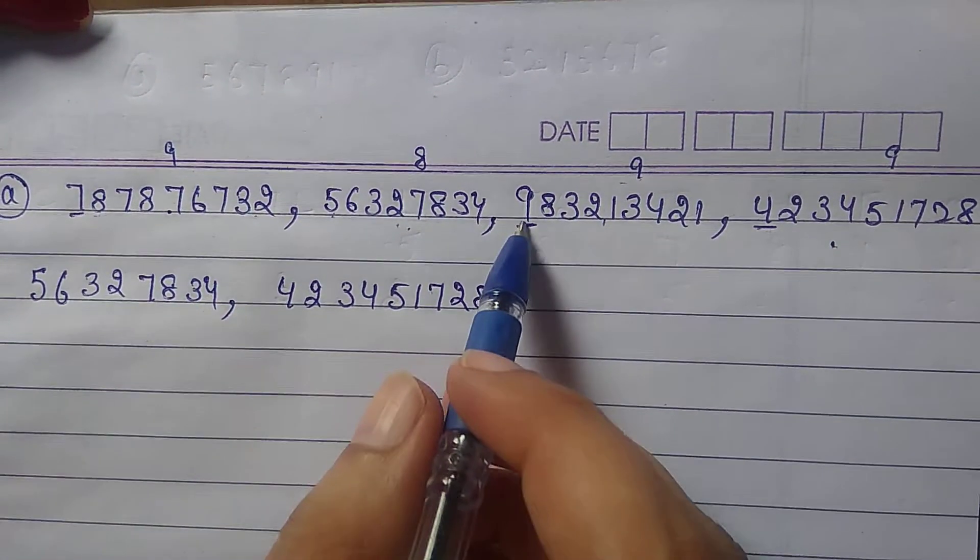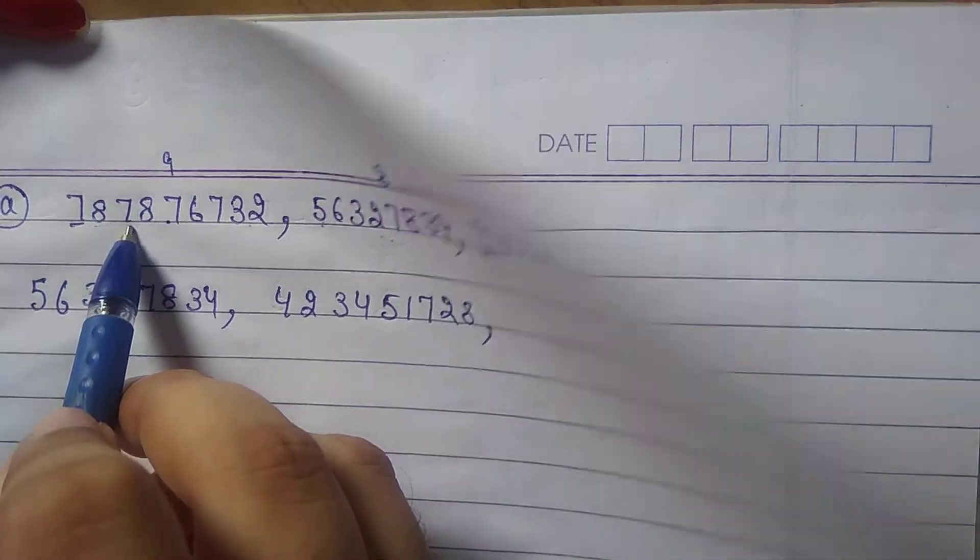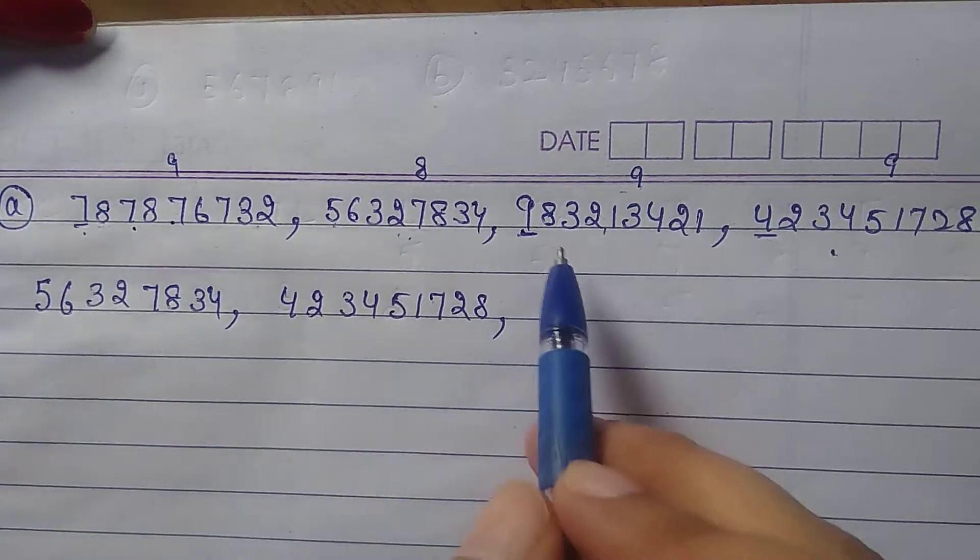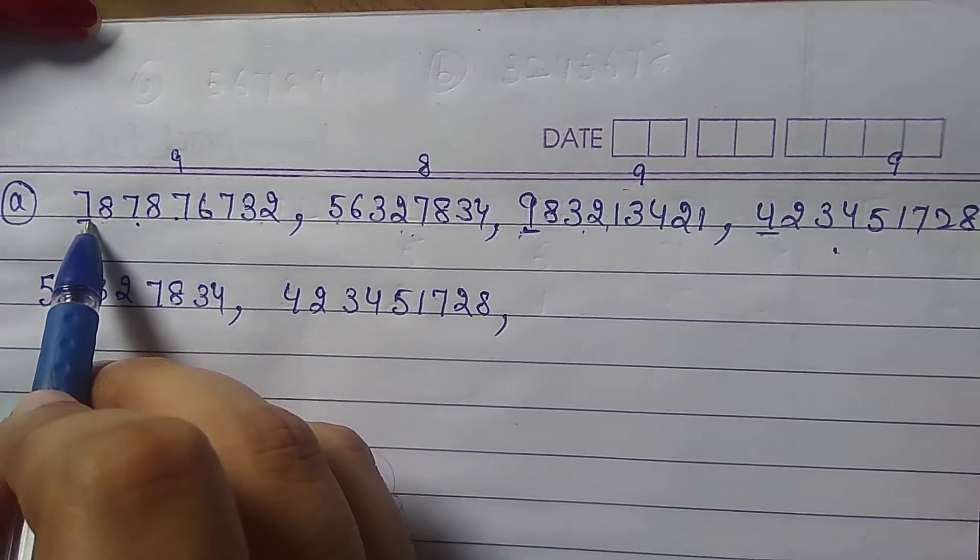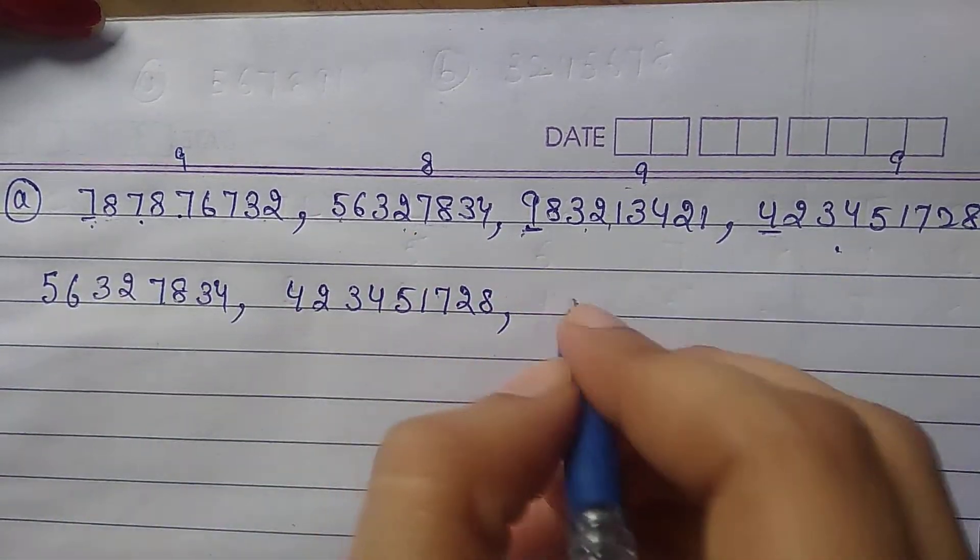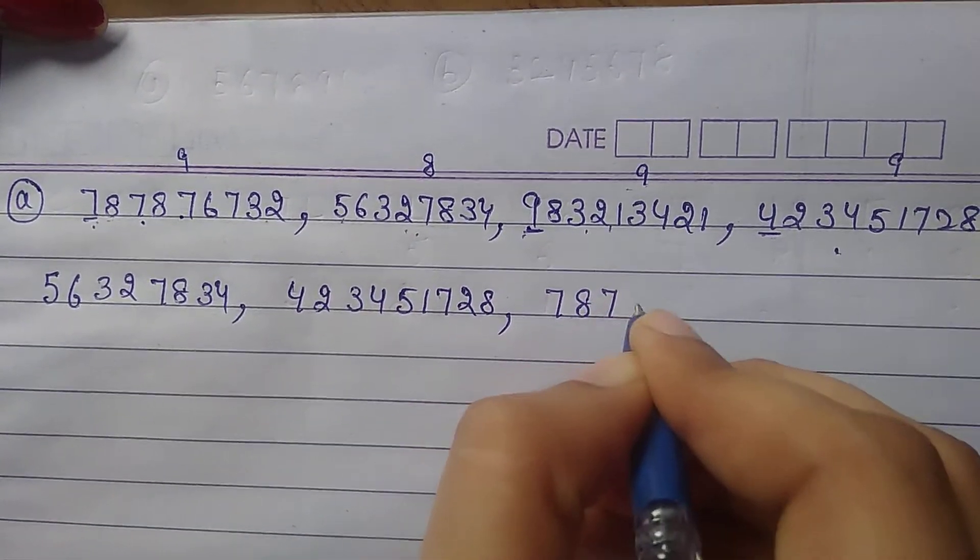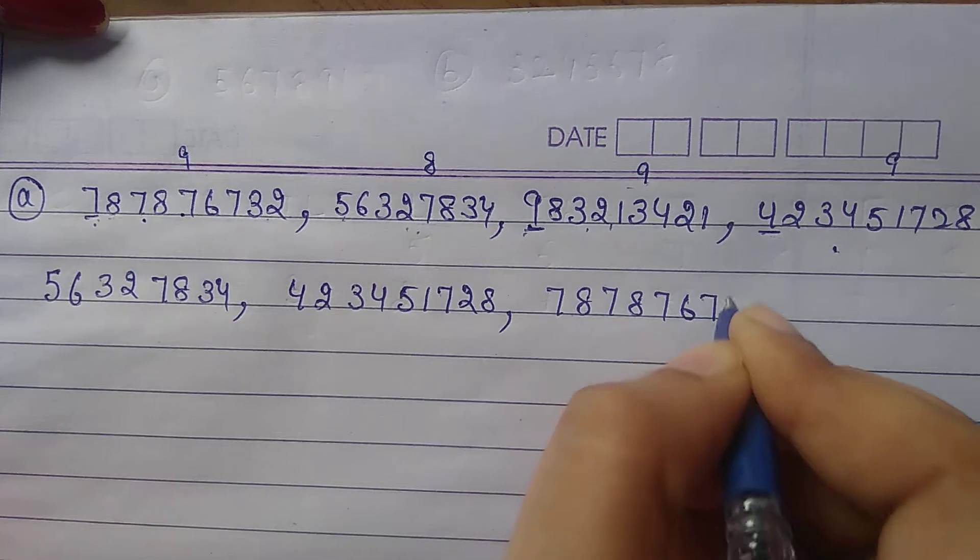Now two numerals are with us. This numeral is starting with 7 and this is with 9. So we will write down 7, 8, 7, 8, 7, 8, 7, 6, 7, 3, 2.